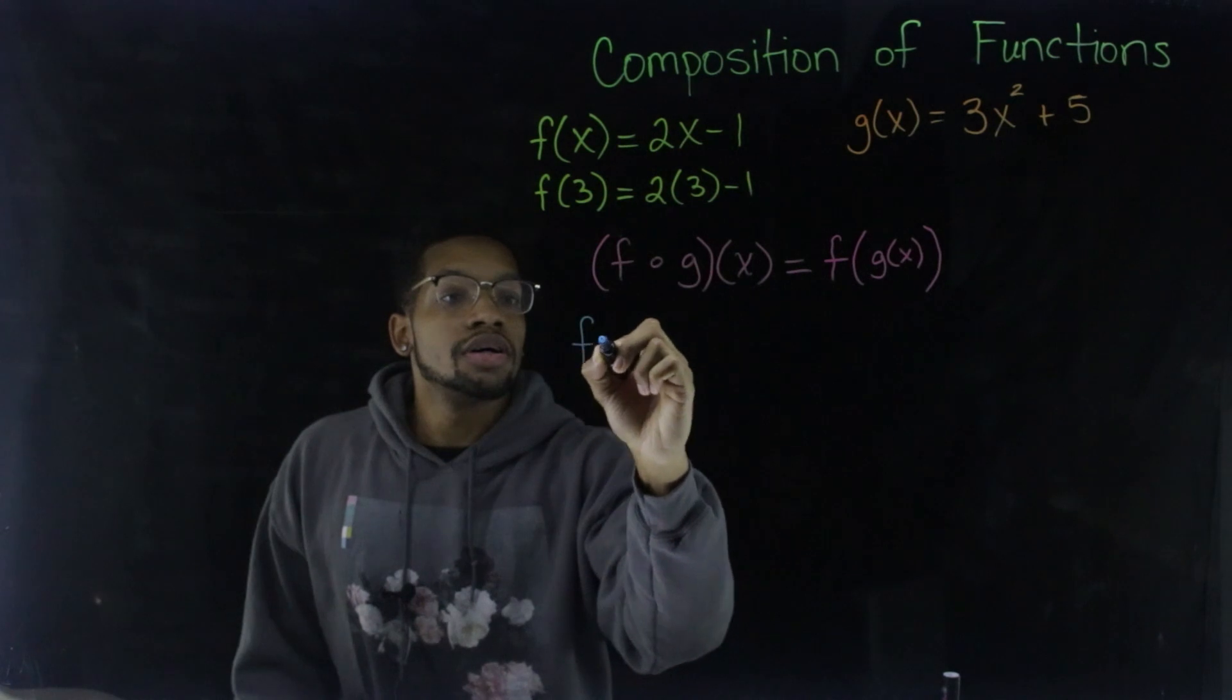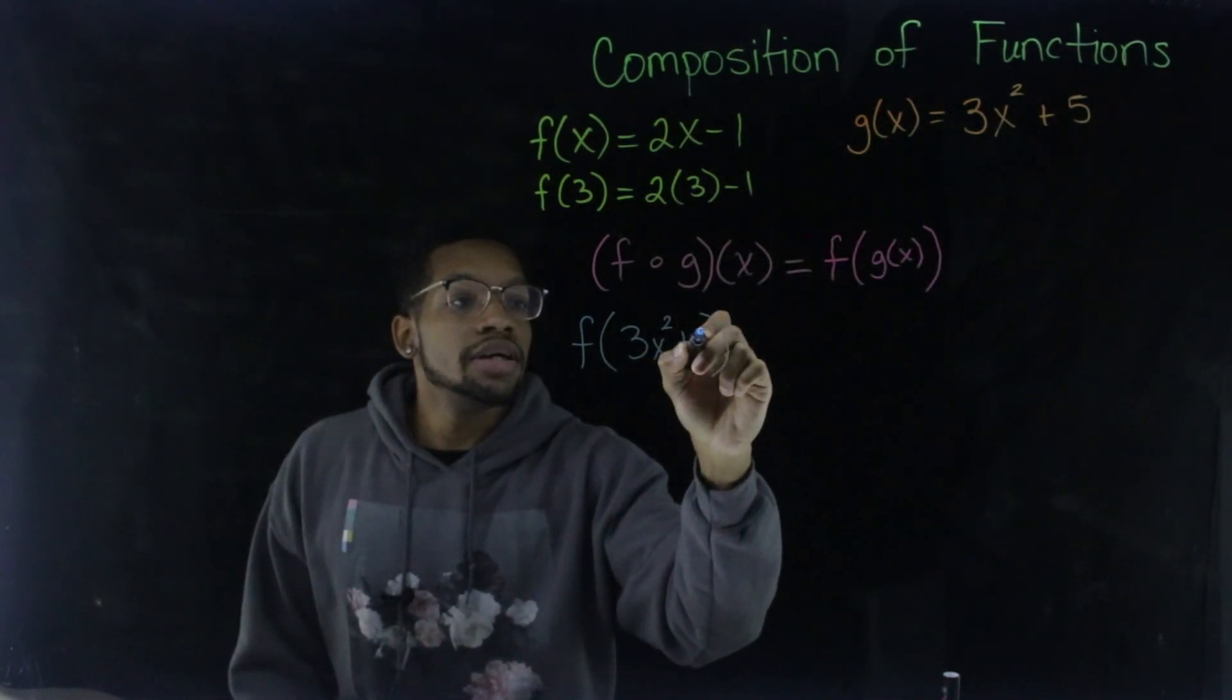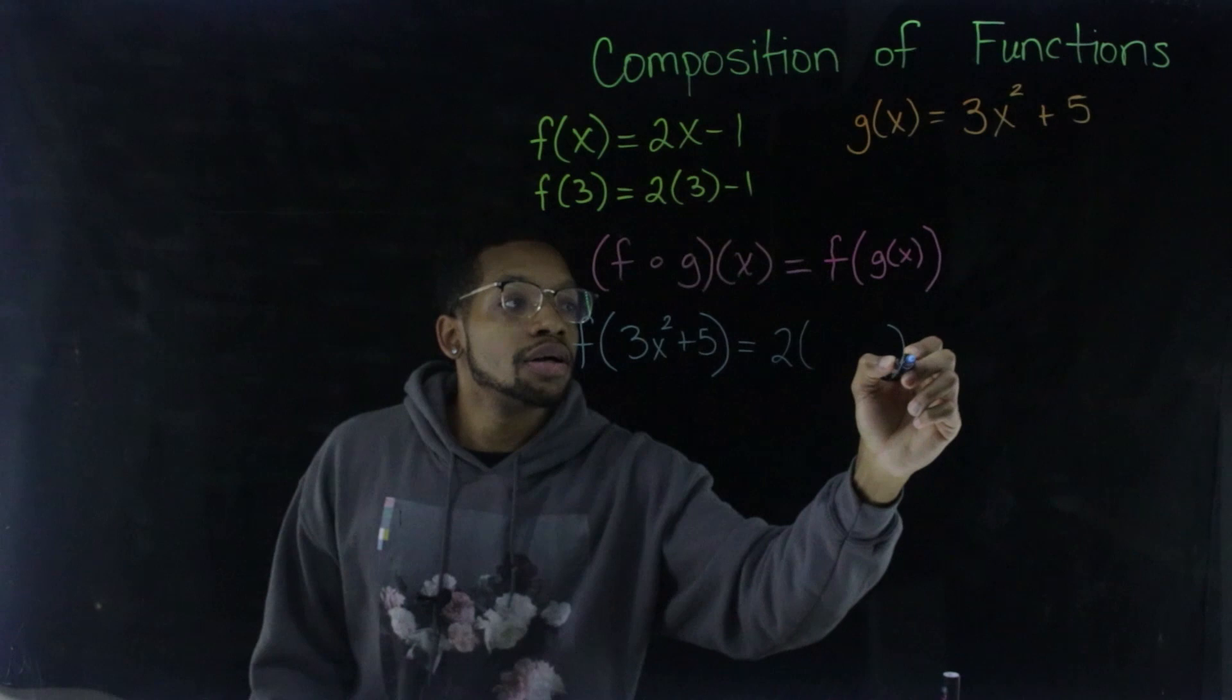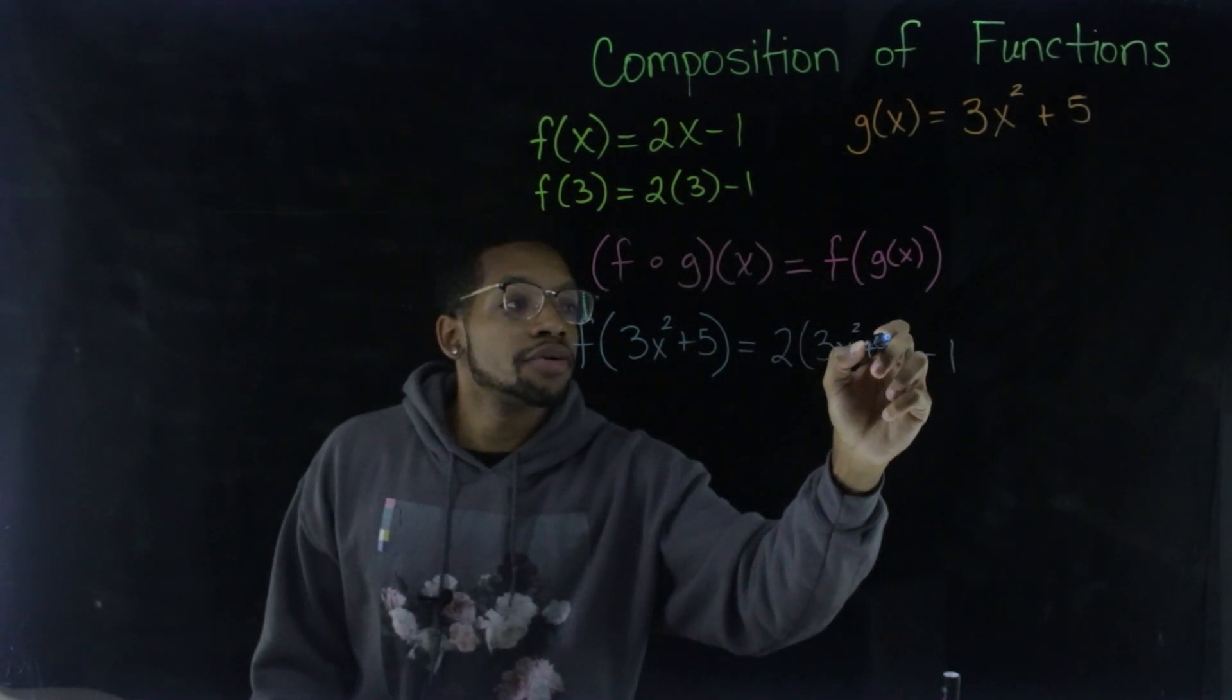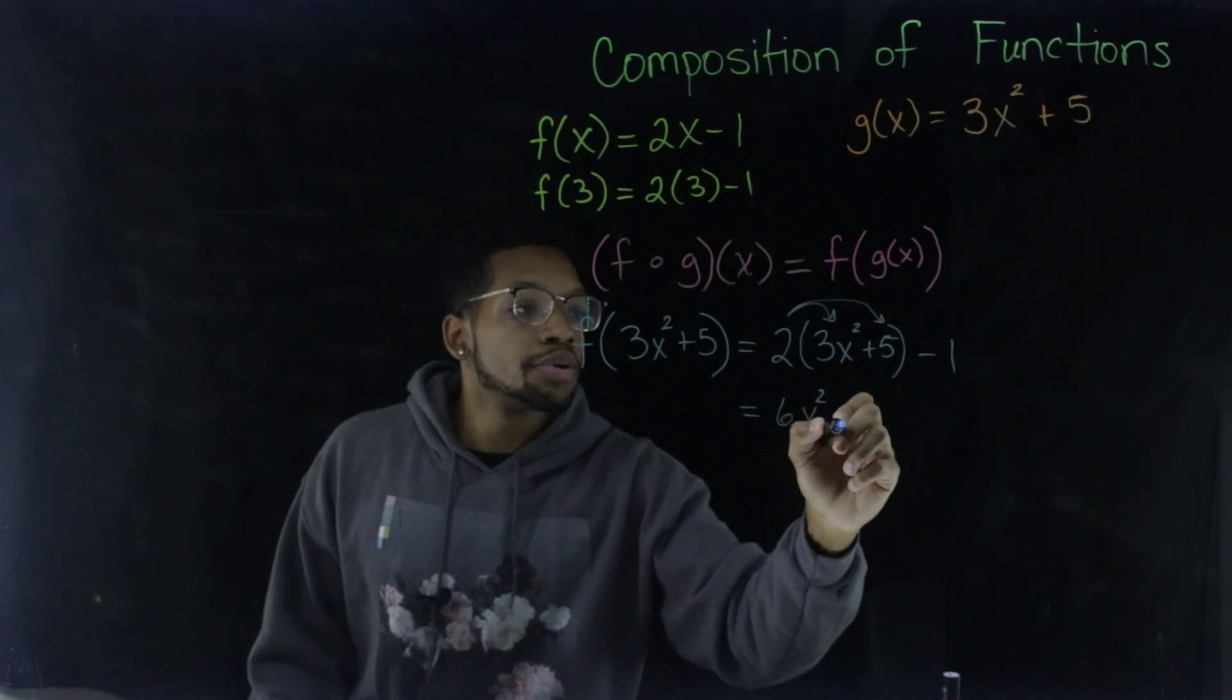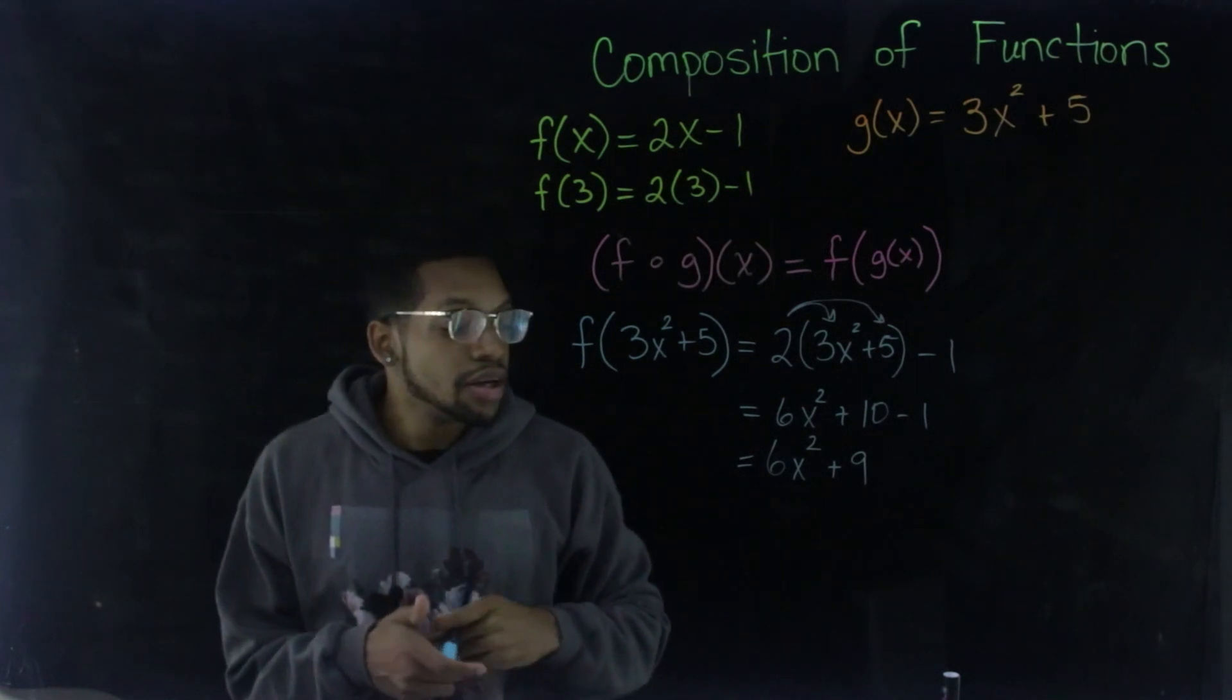So F of, and then in parentheses, we're going to put G of X, which is three X squared plus five. So basically in my function F, wherever I see an X, I'm going to replace that X with three X squared plus five. So F is two X minus one. And so my X here is going to be three X squared plus five. And then you can just evaluate that. If I distribute, that's going to be six X squared plus two times five is 10 minus one. So it'll just simplify to six X squared plus nine. And that's basically it. That's compositions in a nutshell.